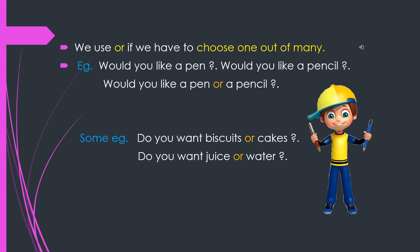We use the word 'or' if we have to choose one out of many. For example: would you like a pen? Would you like a pencil? These are two separate sentences. Now let us see how to join them: would you like a pen or a pencil?